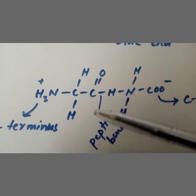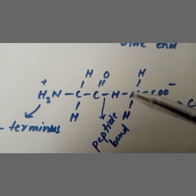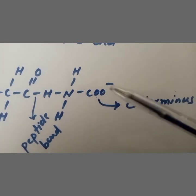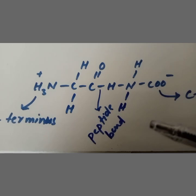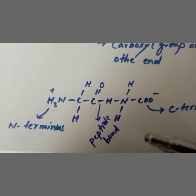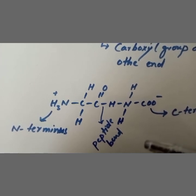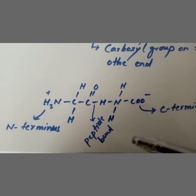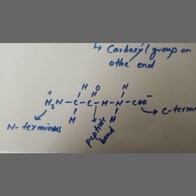Look here — there is the peptide bond between the two amino acids. This is the N-terminus where the amino group is present at one end, while that is the C-terminus where the carboxyl group is present at the other end. So, the three basic features of proteins are: first, they are polymers of amino acids; second, peptide bonds are formed between the amino acids; and third, there is a head-to-tail arrangement of amino acids.